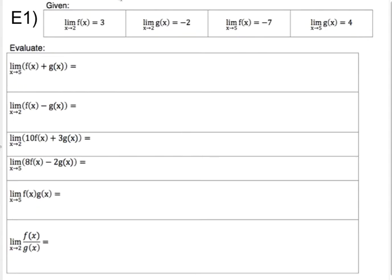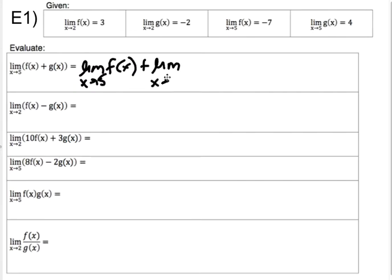So let's do the limit as X approaches five of F plus G. If you need to write this out, you can write that this is the same as the limit as X approaches five of F plus the limit as X approaches five of G. Then look up at the table and find those two values to get negative seven plus four, which gives you negative three.